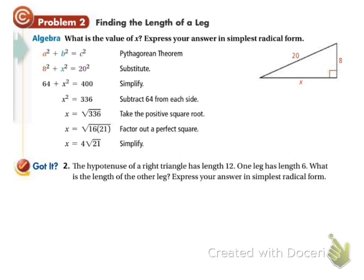So let's try another problem. We're given that the hypotenuse is 12 and one of the legs is 6. So I've got a squared plus b squared equals c squared. So my hypotenuse, 12, has to go in for c squared, so that's 12 squared. It doesn't matter where you put your 6, whether you plug it in for a or for b. I'm going to plug it in for b, so 6 squared.